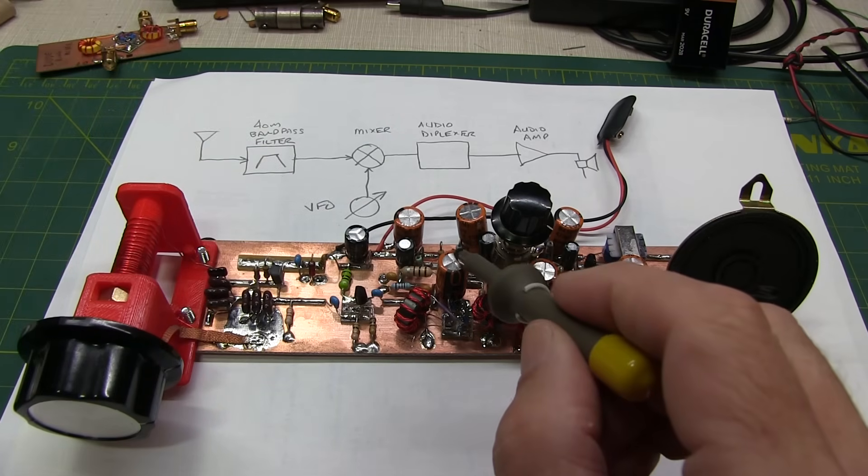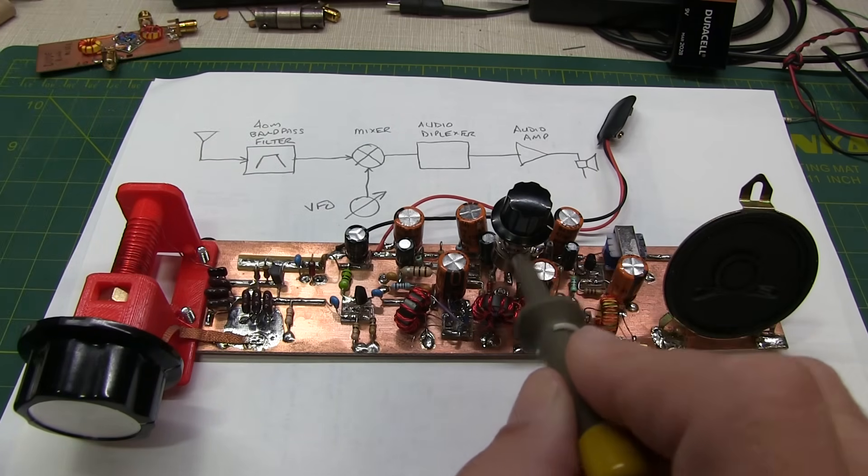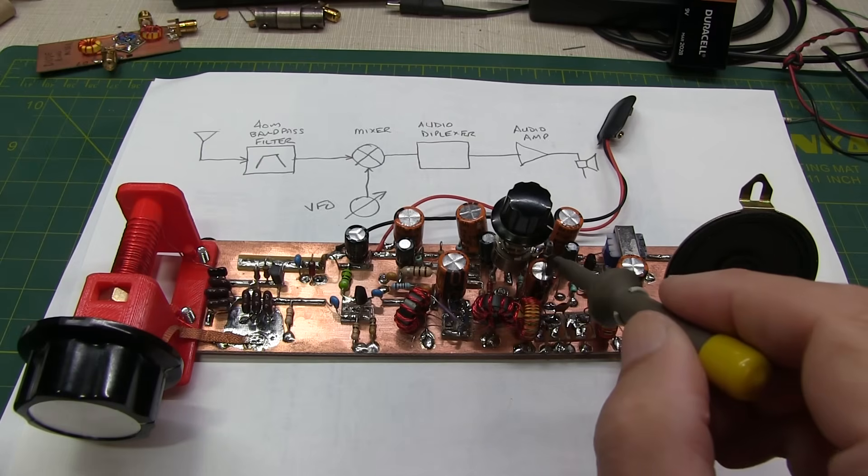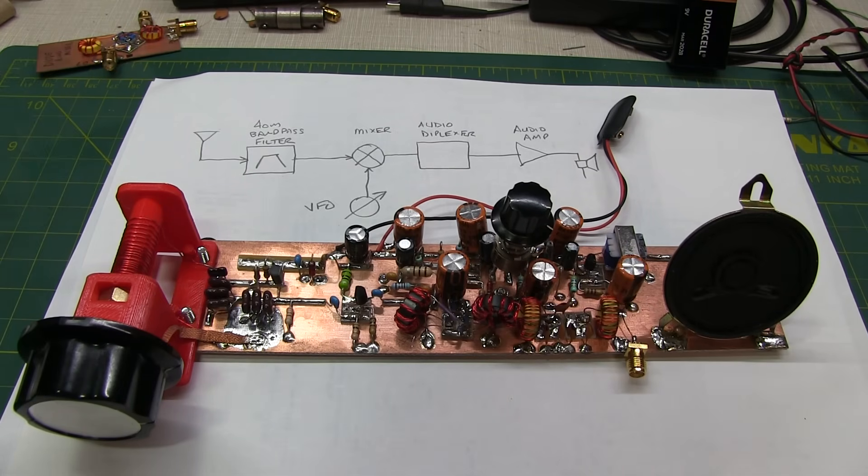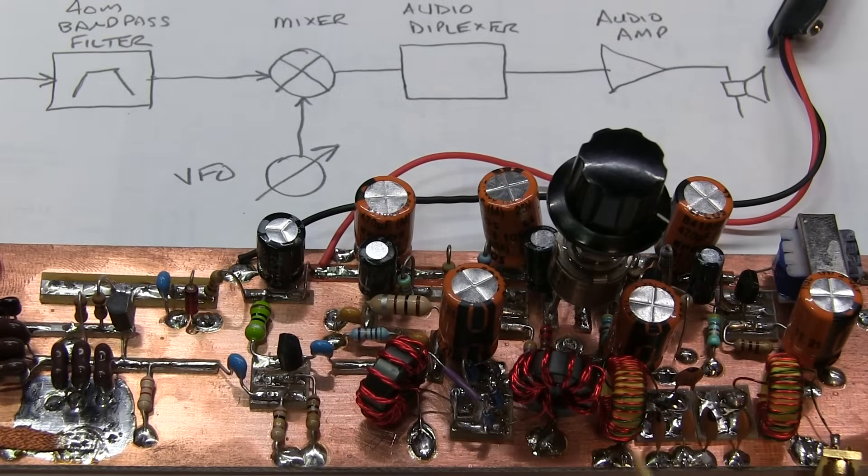The first transistor is right back here. Here's my volume control pot. The second two transistor stages are here. Audio output transformer and going into the speaker. Now as I mentioned, I'm not going into the details of how I laid this out and how I built it because I really want you to take on the challenge to build one yourself.